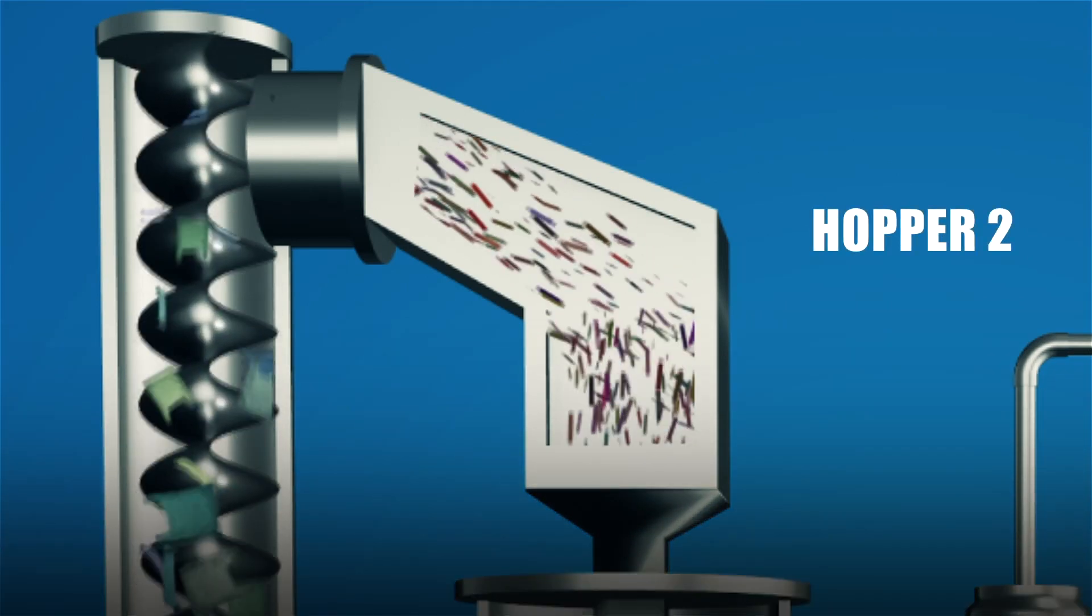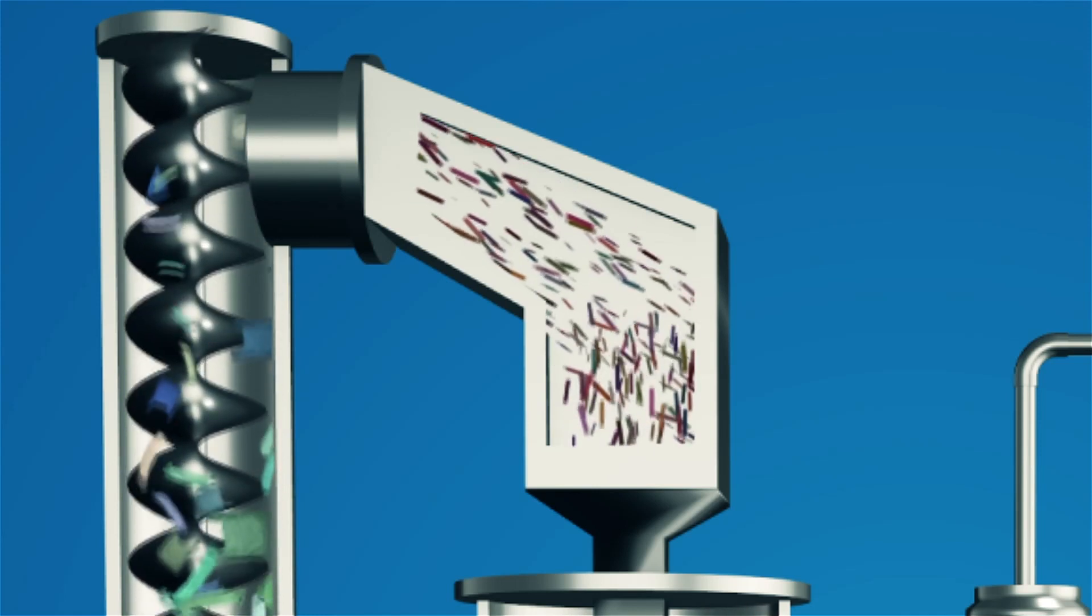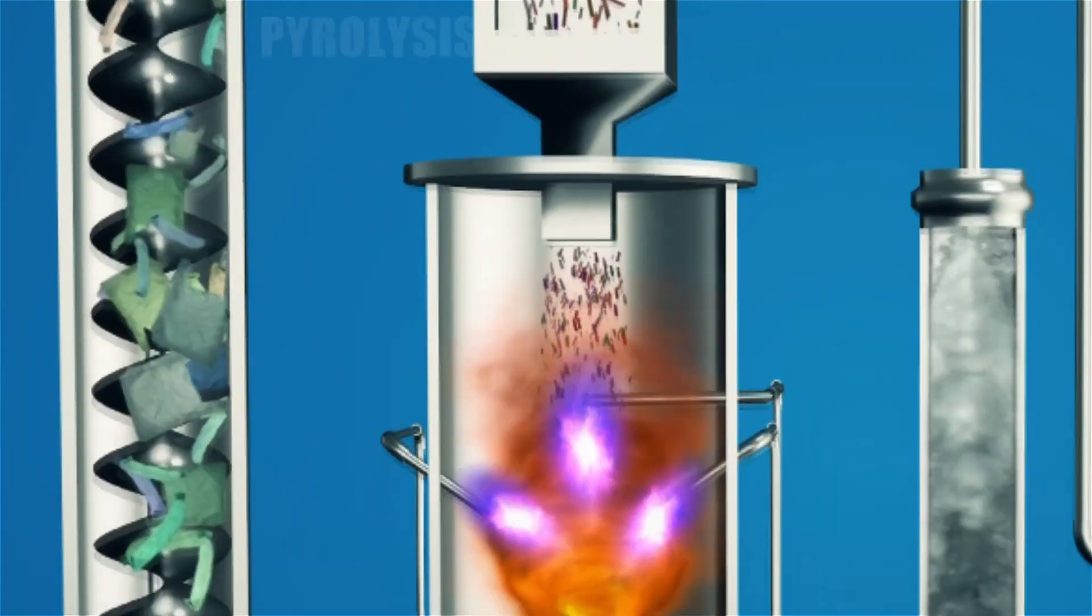The second hopper, connected to the gasifier, supplies feed intermittently to the gasifier. The feed rate can be suitably adjusted by means of a control knob.